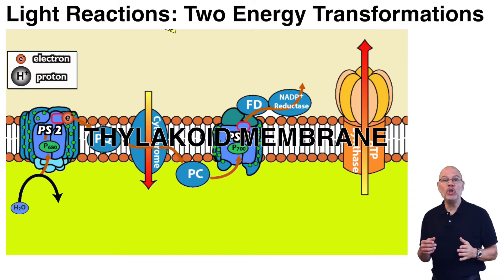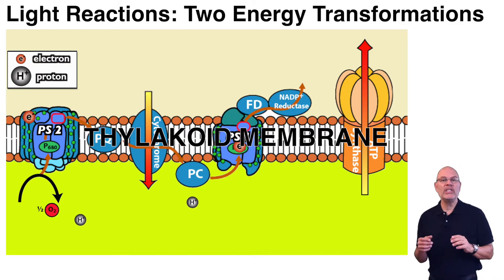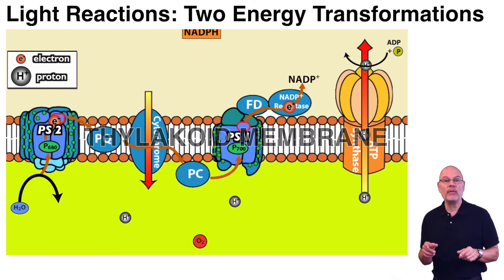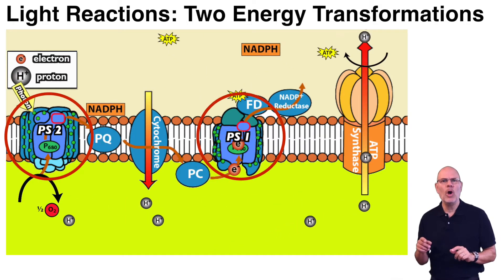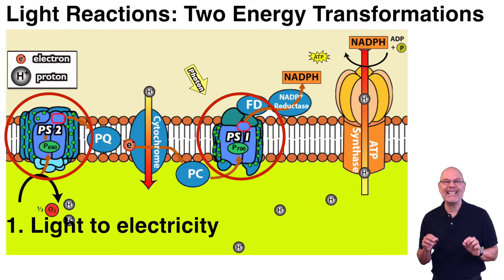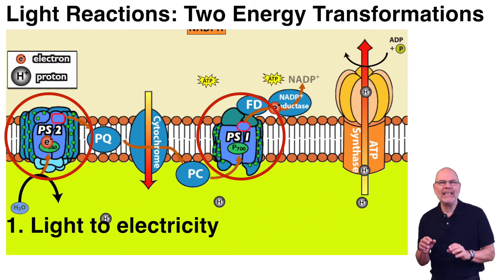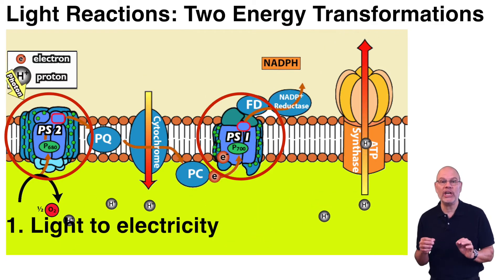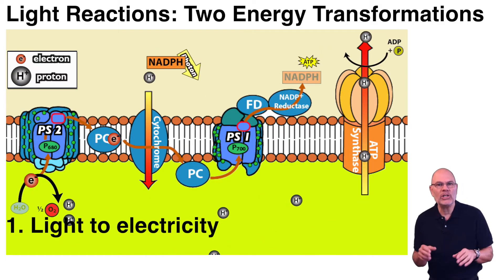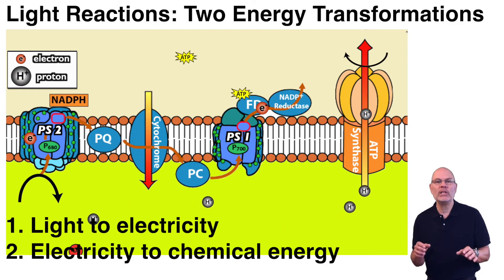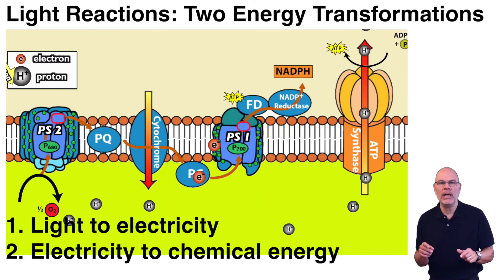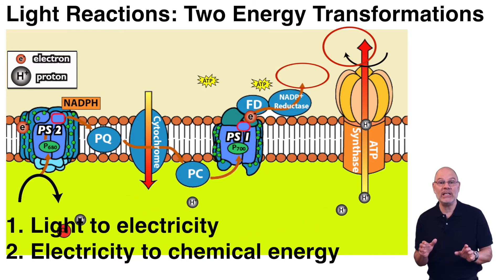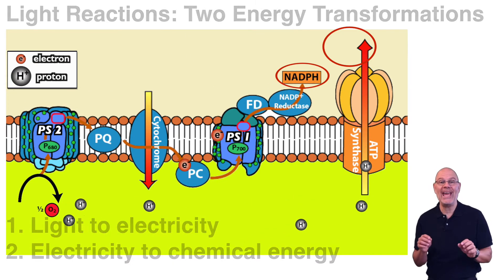The light reactions involve two energy transformations. We need to look at the membrane of the thylakoids. The first transformation is where light energy is initiating an electrical current — those electrons flowing along a pathway called an electron transport chain. The second transformation takes electricity and converts it into chemical energy: ATP is made and NADP+ is reduced to NADPH.